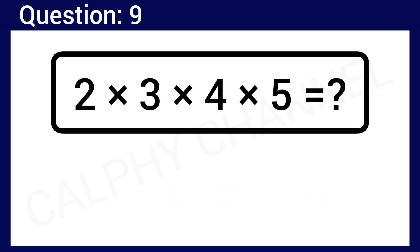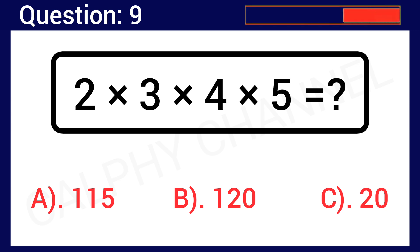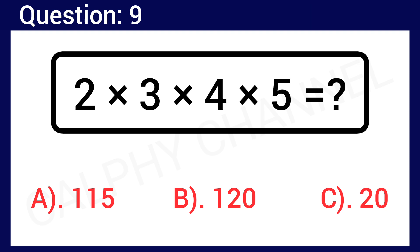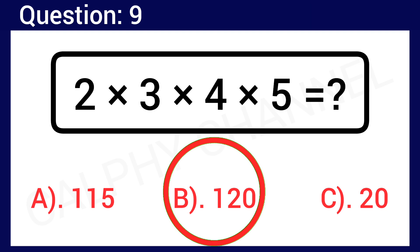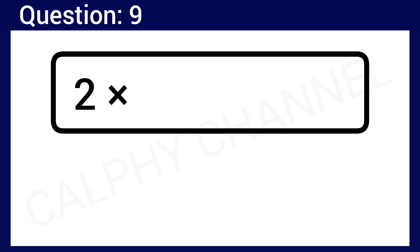Question number 9: 2 times 3 times 4 times 5 is what? Drop the correct answer in the comment section below. Option A: 115, Option B: 120, Option C: 20. The correct answer is Option B, which is 120.